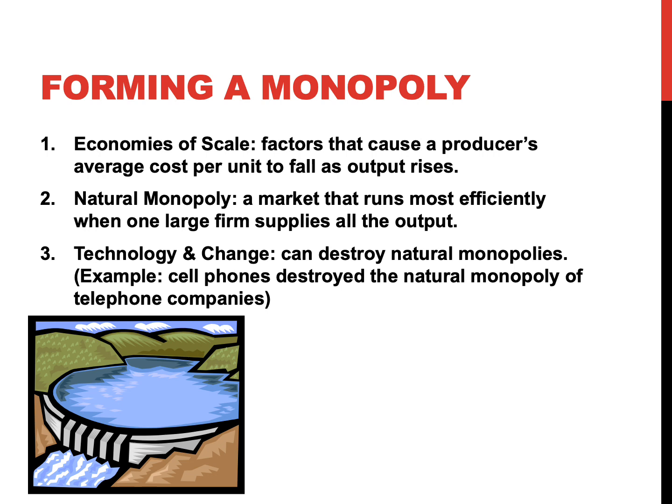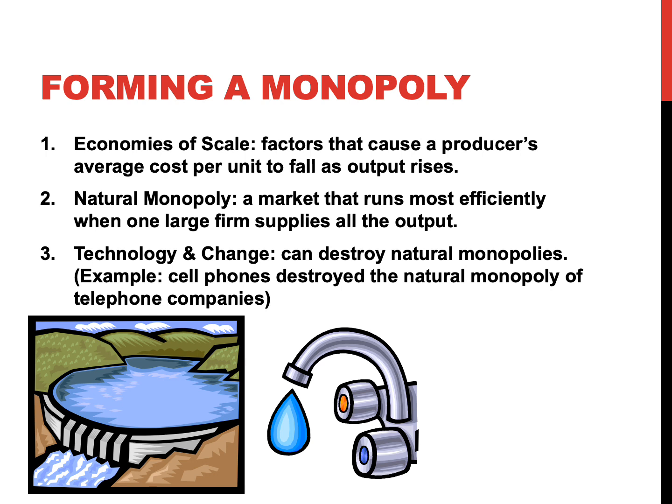There are some markets that run most efficiently with one large firm supplying everything. Think of the water company: if you live in a city, there's likely only one water company supplying all the water. No one's competing for your business because it would be terribly expensive to lay new plumbing lines throughout the entire city, and any new customer switching companies would have to pay for all the digging and installation. So it just makes sense for one company to provide all of it. In situations like this — a natural monopoly — these are generally highly regulated by the government.